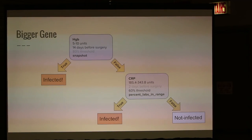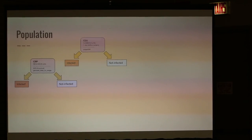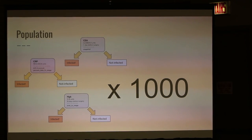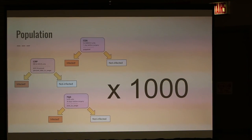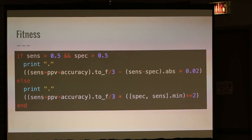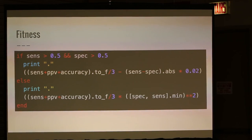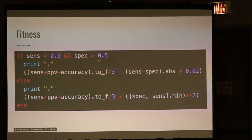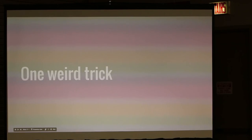In the evolutionary process, you generate a bunch of these randomly. I used any lab value that had more than 10 patients and shoved in random values within the minimum and maximum of each lab type. My fitness function was the average of sensitivity, positive predictive value, and accuracy with a penalty if the sensitivity and specificity were far apart. I also penalized severely if either sensitivity or specificity were not above 50%.